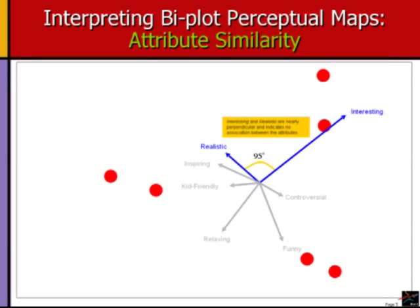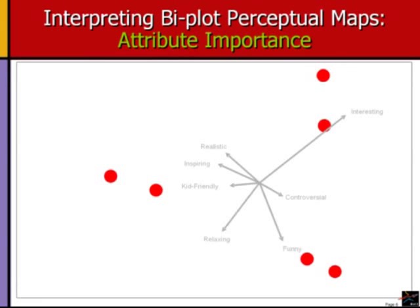Perpendicular vectors represent no association, i.e., low correlation, between attributes. Performance on one does not really tell us much about performance on the other. For instance, interesting and realistic are nearly perpendicular at 95 degrees. Whether a TV show is interesting or not tells us nothing of how it is perceived in terms of its realism.